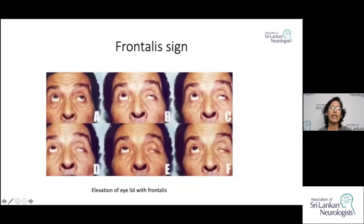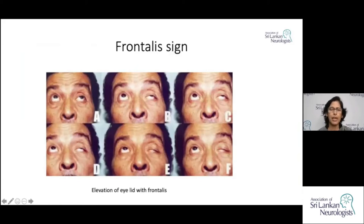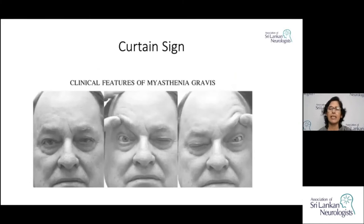There are interesting signs described. The frontalis sign: in a series of photographs showing worsening ptosis, you see elevation of the eyebrows with wrinkling of the forehead to maintain the eyes open — that is the frontalis sign. Another sign: if you try to open one eye forcibly, there is worsening of ptosis in that eye, and then if you open the other eye forcibly, you again see worsening of ptosis.